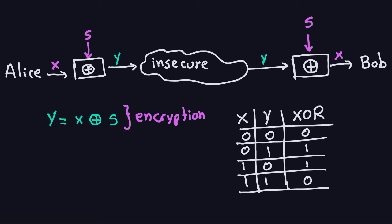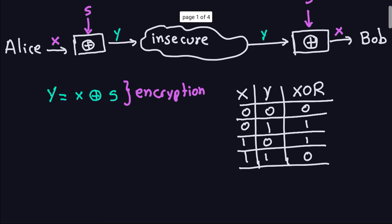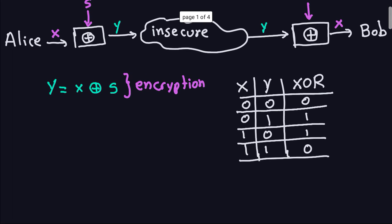Now we're going to explain why that is the case. The reason is that you always add — let's call this an addition, not really an addition but let's call it addition, the XOR addition. You add S for encryption and you add S for decryption. You do exactly the same here: addition of the bits, or the string of bits, S. The reason that's going to work is because of one of the properties of XOR.